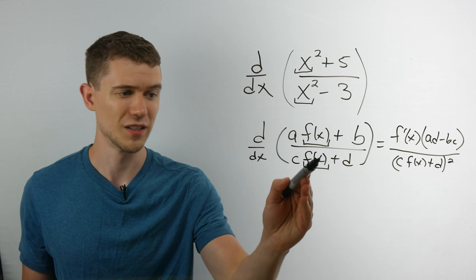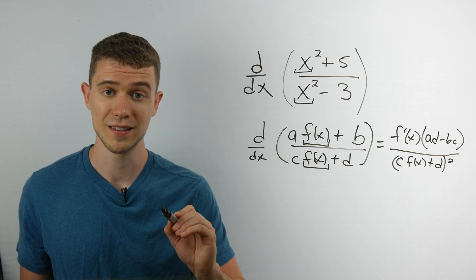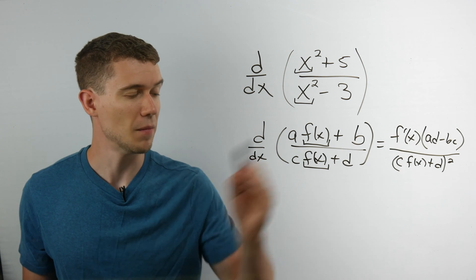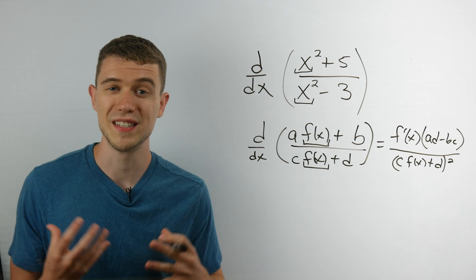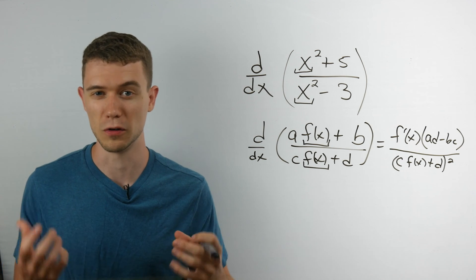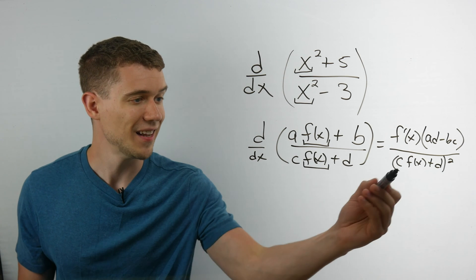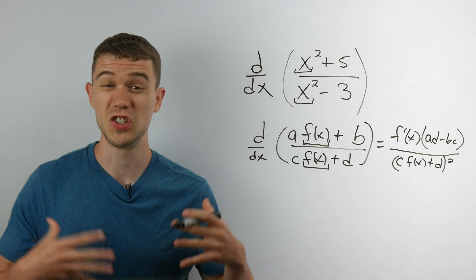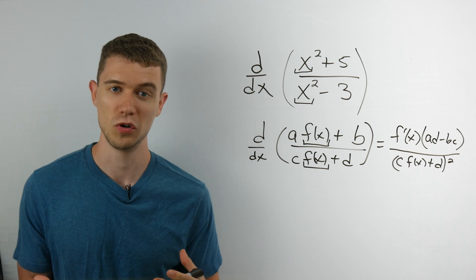And here's what it's supposed to be. It's f prime of x, so it's just the derivative of this f of x times ad minus bc. Those of you who have seen some linear algebra might recognize that as the determinant formula for a two by two matrix, which is kind of interesting. And then it's over the bottom squared, which is just what you would expect in a quotient rule.